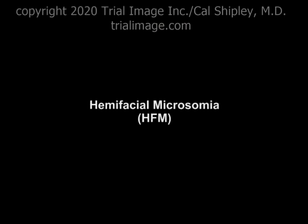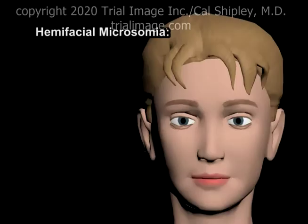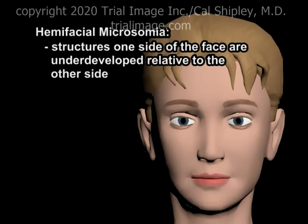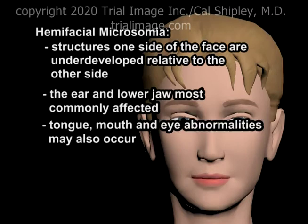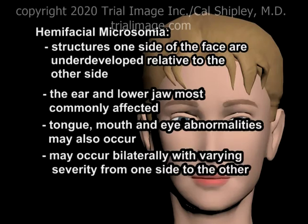Now that we know a little bit more about the key stages in the development of the facial structures, let's look at hemifacial microsomia. By definition, hemifacial microsomia involves underdevelopment of facial structures on one side of the face relative to the other side. The ear and lower jaw are most commonly affected, but abnormalities of the tongue, mouth and eye may also be involved. In some cases, both sides of the face may be affected, often to varying degrees.